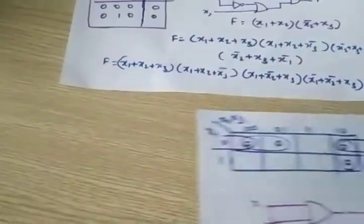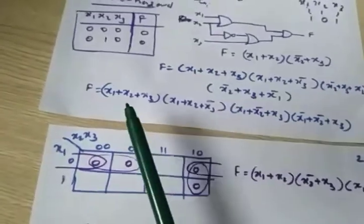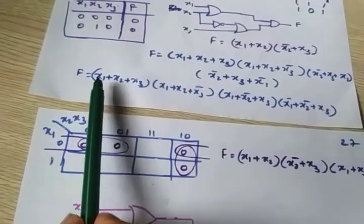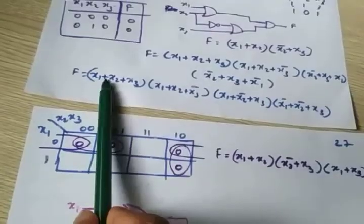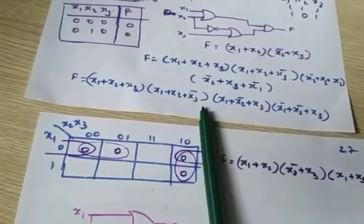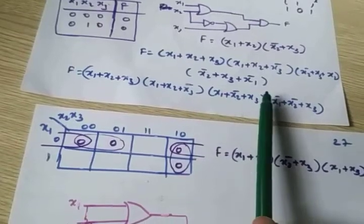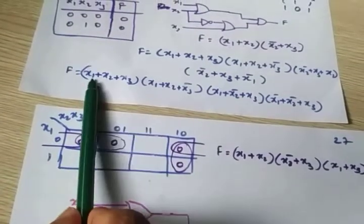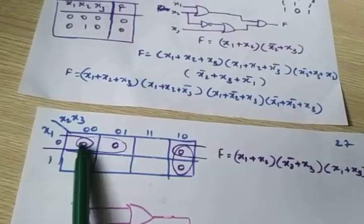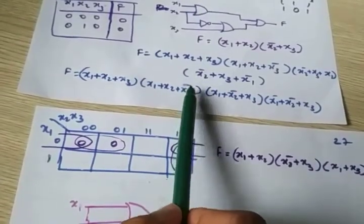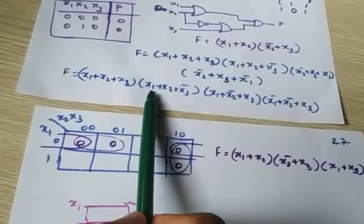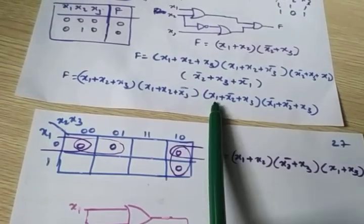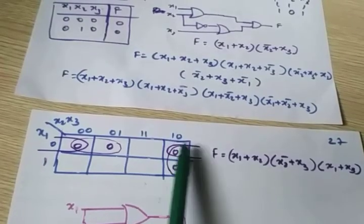How to map this into K-map. The first term x1 plus x2 plus x3 — since this is Product of Sums form, all variables are zero: 0,0,0 gives output 0. Next term 0,0,1 — in POS form, bar means one and no-bar means zero — so 0,0,1 gives output 0. Then 0,1,0 gives output 0.